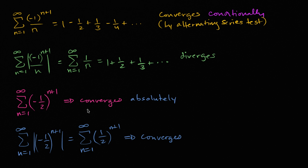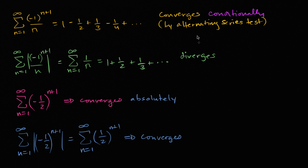So we've talked a lot about convergence or divergence, and what we're doing in this video is introducing a nuance — flavors of convergence. You can converge, but it's interesting to ask: would it still converge if we took the absolute value of the terms? If it converges but doesn't converge when you take the absolute value, it converges conditionally. If it converges and still converges when you take the absolute value of the terms, we say it converges absolutely. Hopefully you find that interesting.